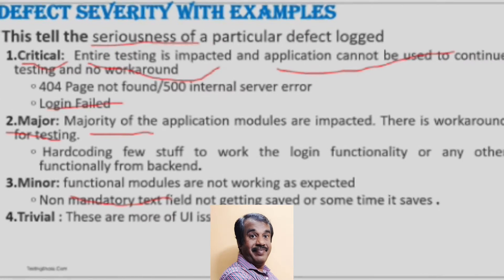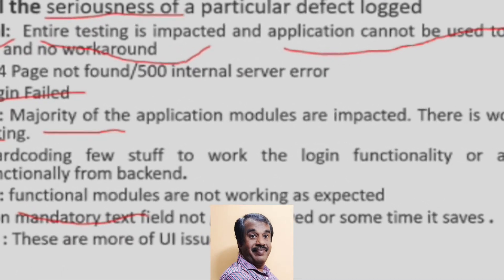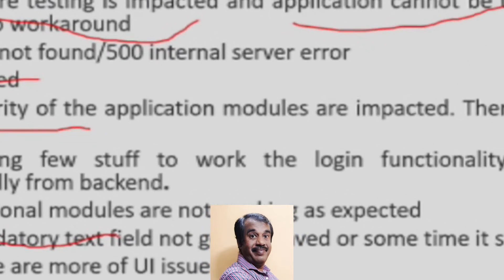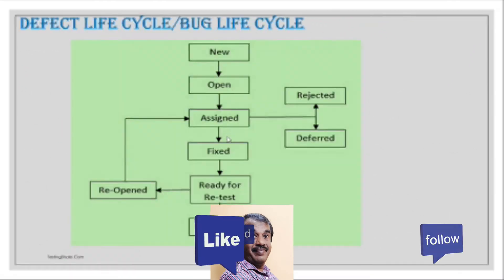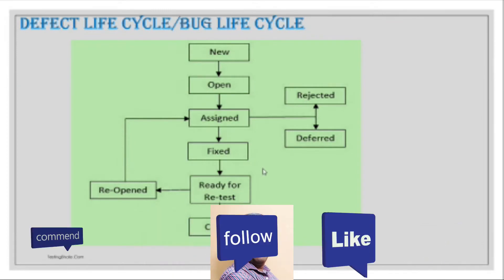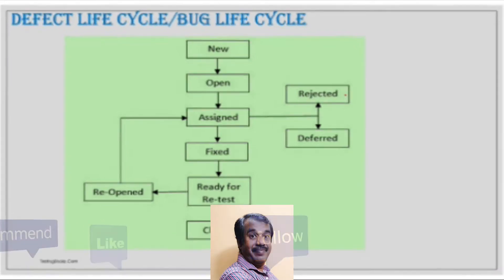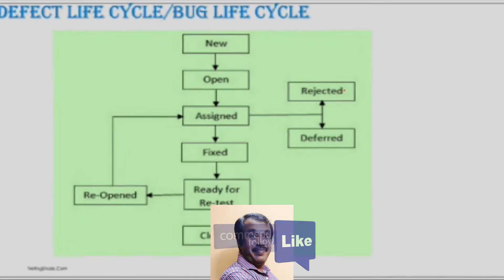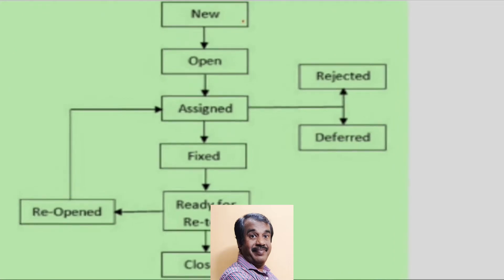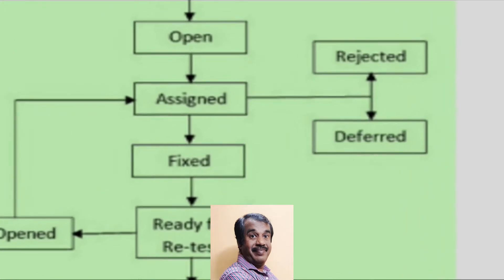So these are the four types of defect severity: Critical, Major, Minor, and Trivial. Moving to the defect life cycle — any defect starts with the status New. Whenever a tester logs a defect, it is opened with a New status.